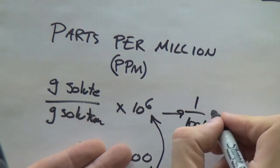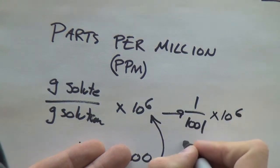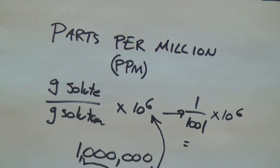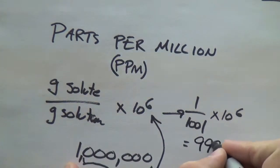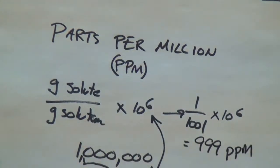So here's an example. We got one gram of solute over a solution that's a thousand and one parts times it by a million, or ten to the six, and you get 999 parts per million.